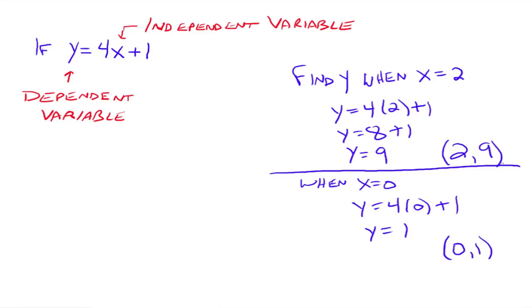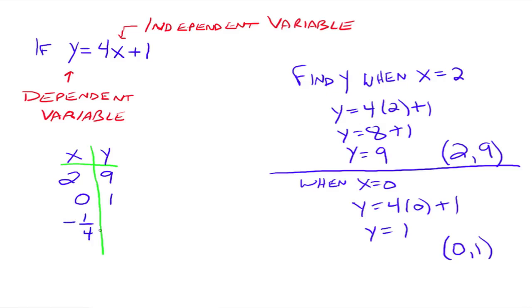Another way to think about creating ordered pairs is by making a t-chart — it looks like a T. The left column is x, the right column is y. When x is 2, y is 9; when x is 0, y is 1. When x is negative one-fourth, we get 4 times negative one-fourth equals negative 1, and negative 1 plus 1 is 0, so y is 0. We could sit here forever finding ordered pairs — there are an infinite number that make this equation true.